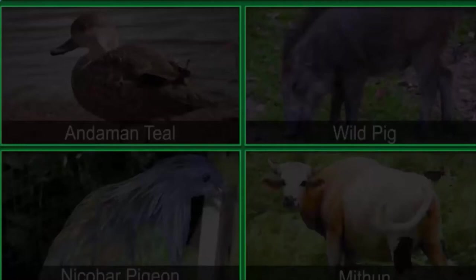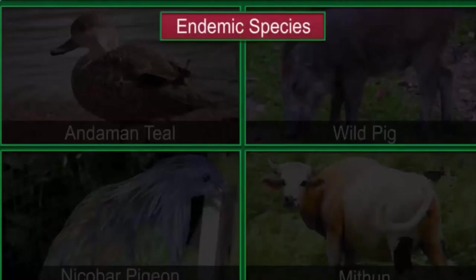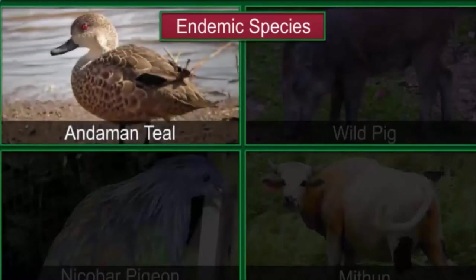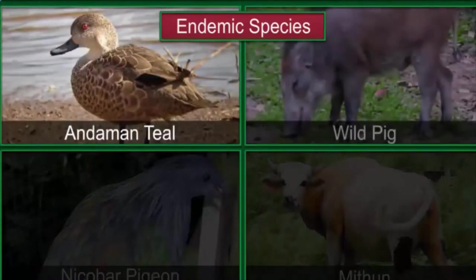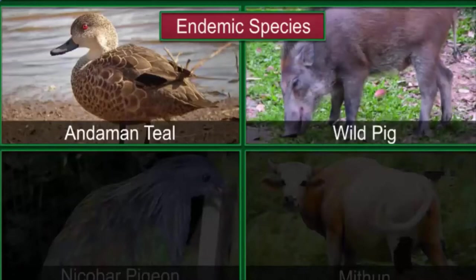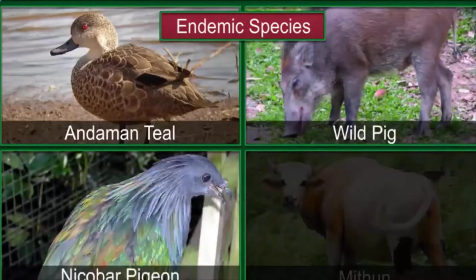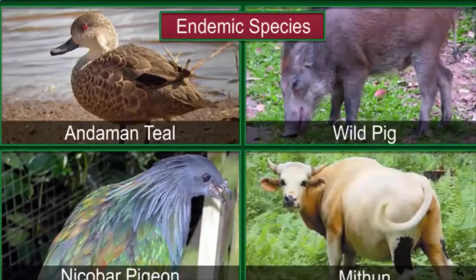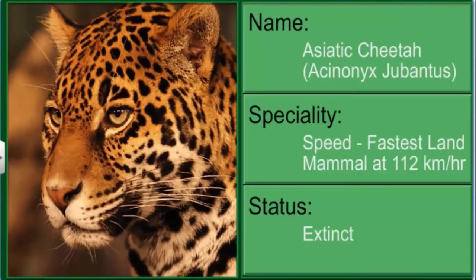A species found only in a particular region due to isolation by natural or geographic barriers is called an endemic species. For example, the Andaman teal, wild pig, the Nicobar pigeon, and a bovine called Mithun found in Arunachal Pradesh.